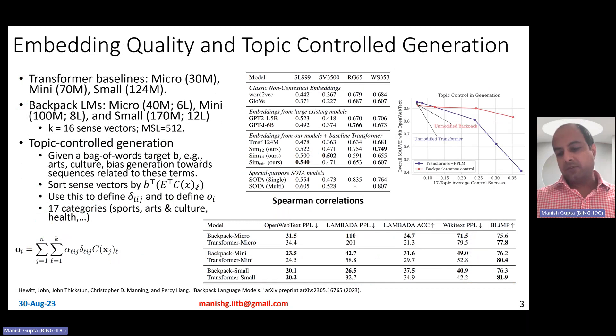Now, the nice part, so we've understood how the backpack LM is trained. In fact, they train three different sizes of backpack LMs, corresponding to three different transformer baselines. So their backpack LMs have six layers, eight layers, and 12 layers of size, micro, mini, and small, 40 million, 100 million, and 170 million parameters. They use 16 sense vectors for all the models, and a max sequence length of 512.